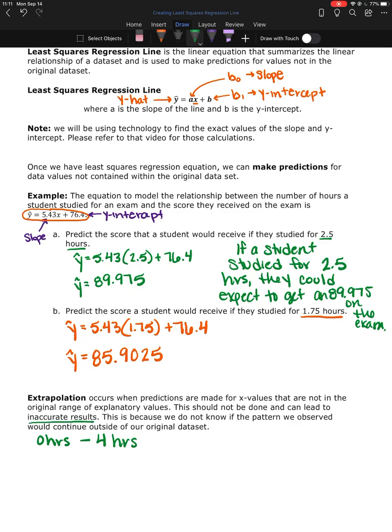When you do that, if I were to predict for 6 hours, this could lead to very inaccurate results. And the reason for that is once we get past 4 hours, we don't know how this pattern continues. It looks linear, but then it might change drastically on us after we pass 4 hours of study. Maybe it's burnout and all of a sudden someone who studies for 6 hours, they actually start getting really low scores because they burnt out. We don't know what happens to those students because we did not include those values in the original data set.